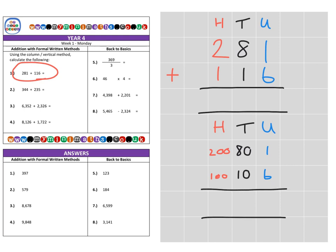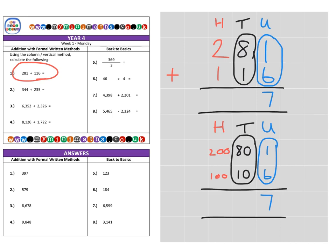When we come to add them up, one unit adds six units — that's the same as saying one apple adds six apples, giving us a total of seven. Then we're going to look at the tens: we've got 80 plus 10, giving us 90. And then finally we can do 200 add 100, which is 300. So we have an answer of 397.